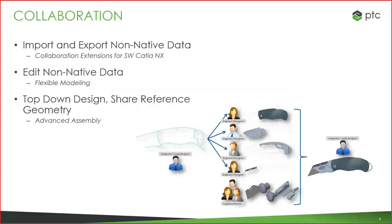Top-down design is a methodology that many of our customers work with, and our advanced assembly extension facilitates that type of work and addresses the challenges that arise as designs get larger and more complex. Creo allows you to decide exactly who can edit what geometry and how those changes get pushed down the line. And when you need to share designs with partners, suppliers, or third parties outside the organization, you're able to ensure all intellectual property is secure and only share out the information you need.